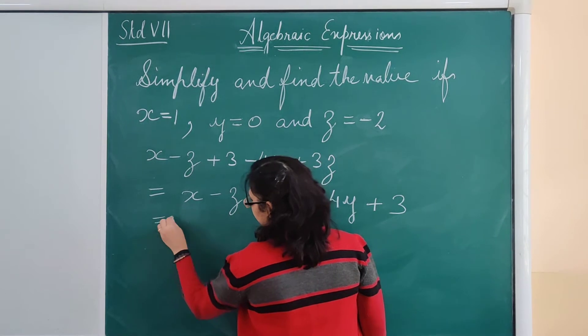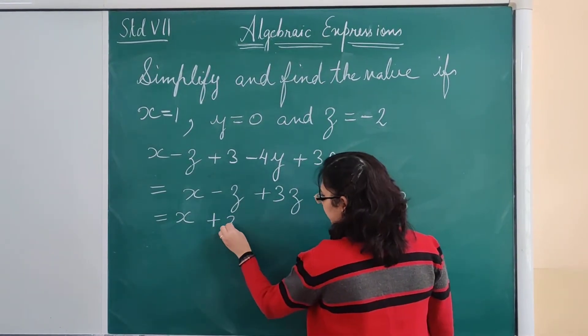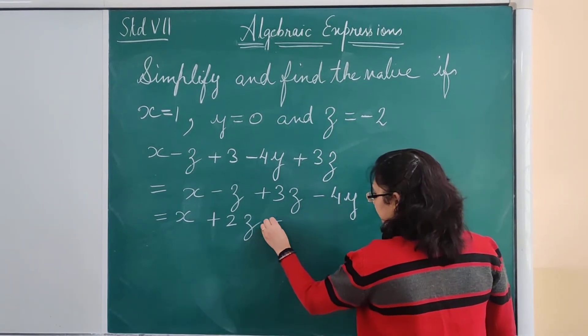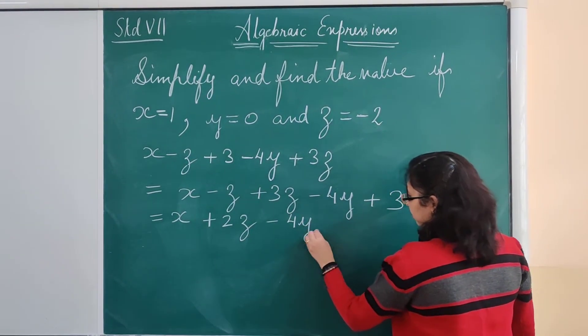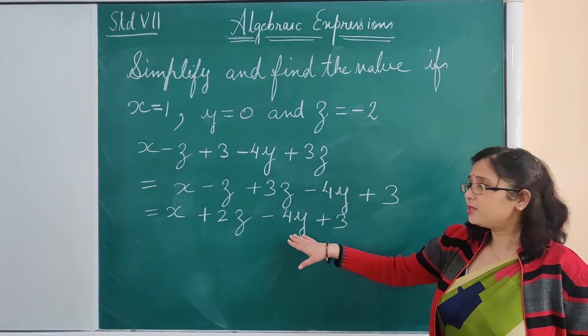So this will become x minus z plus 3z, which becomes plus 2z, minus 4y plus 3. So we have simplified this algebraic expression.